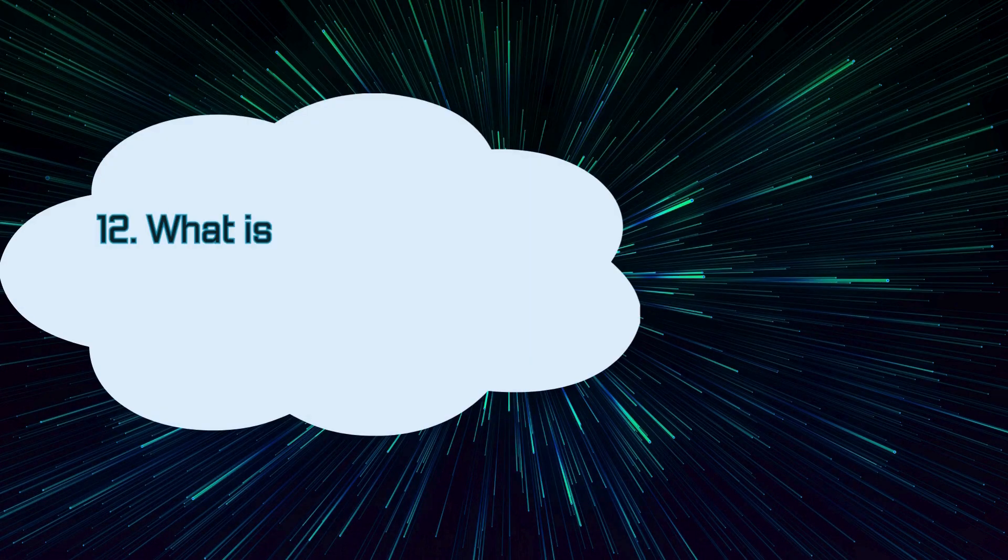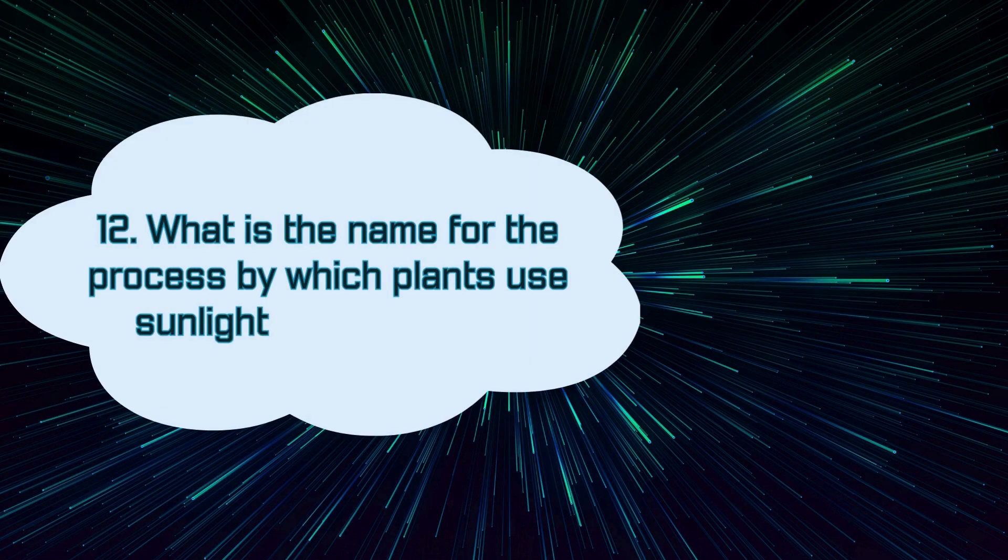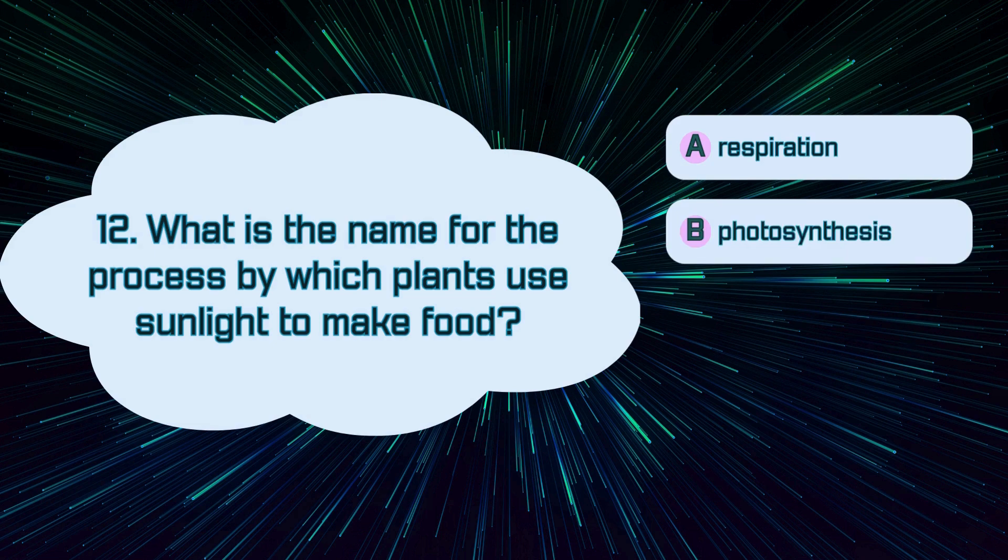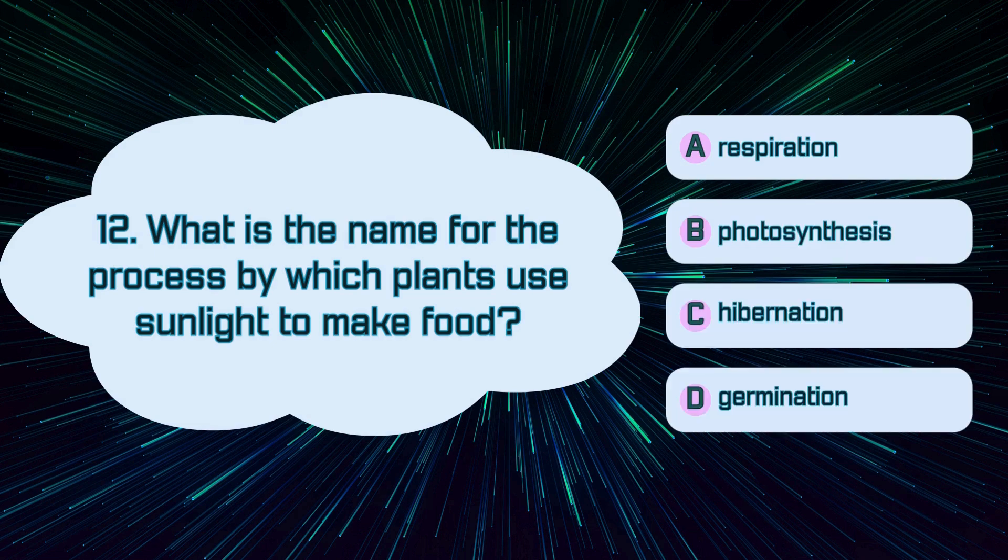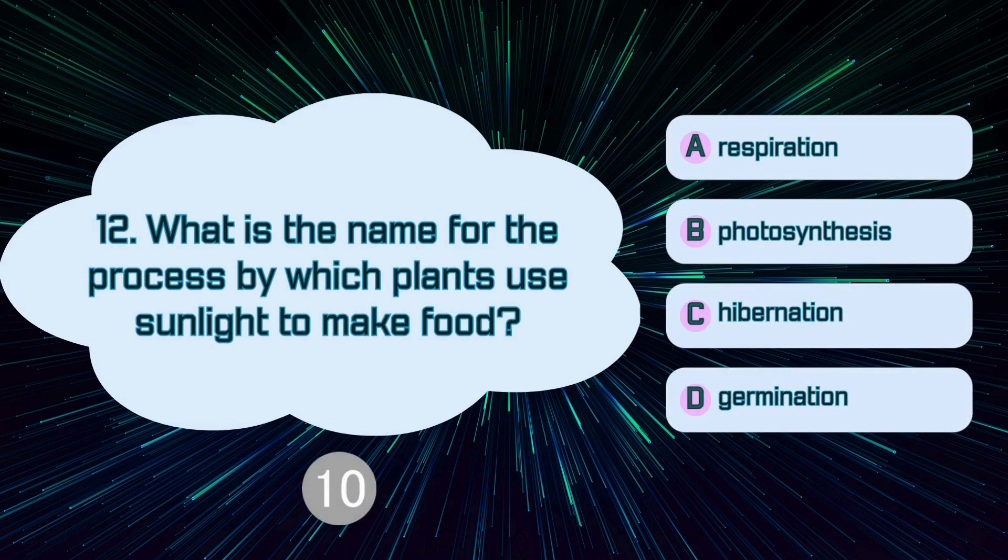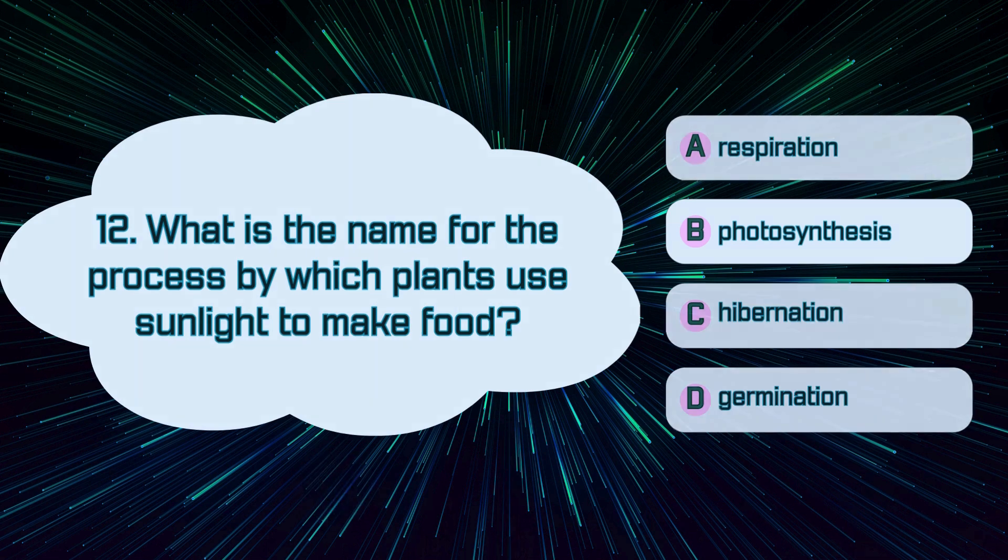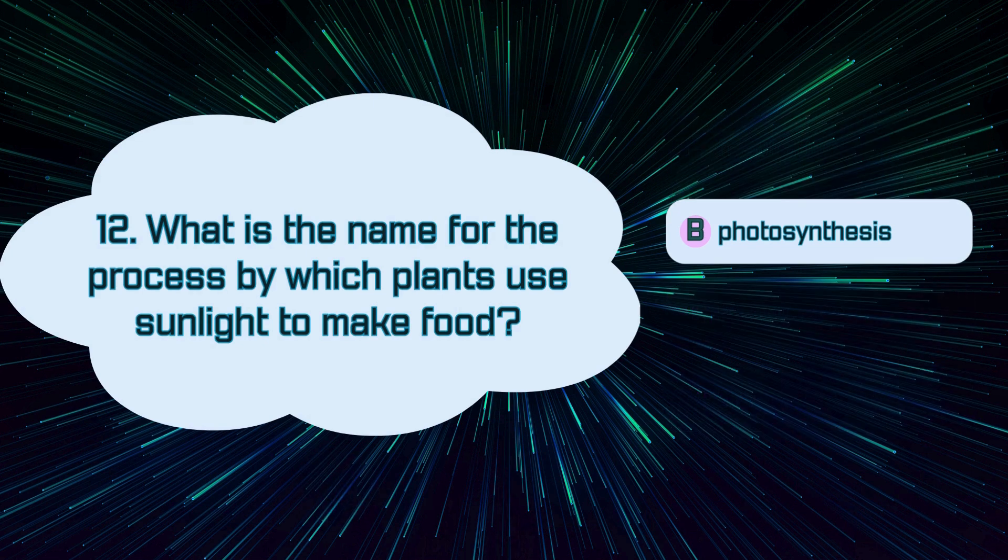Number 12. What is the name for the process by which plants use sunlight to make food? A. Respiration, B. Photosynthesis, C. Hibernation, D. Germination. The correct answer is B. Photosynthesis.